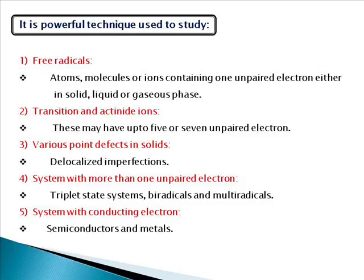The limitation of ESR or EPR spectroscopy is that it is useful only for paramagnetic substances. Paramagnetic substances are of two types: stable paramagnetic substances — for example, NO, oxygen, or NO₂ — and unstable paramagnetic substances, meaning the intermediates formed in organic reactions. The limitation is that the compound should contain at least one unpaired electron.